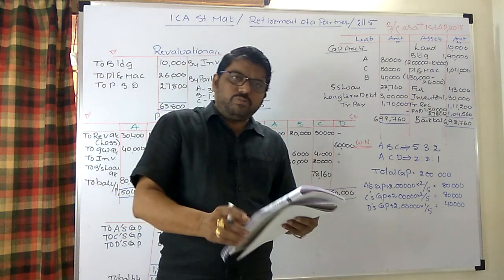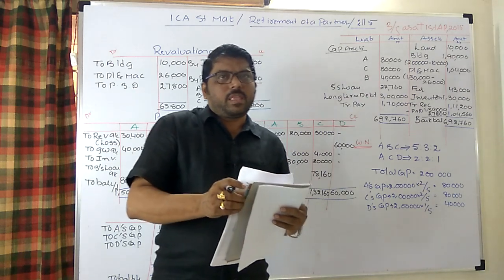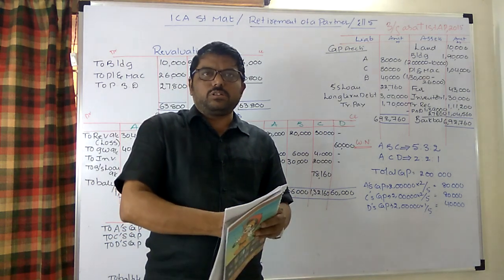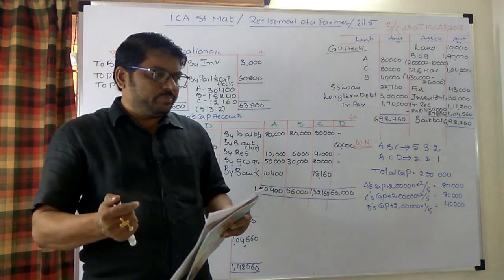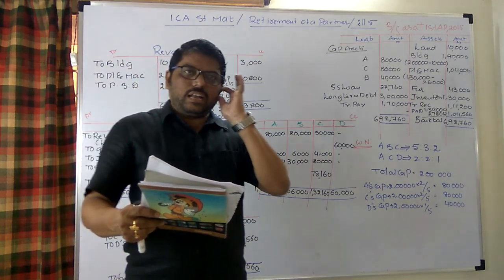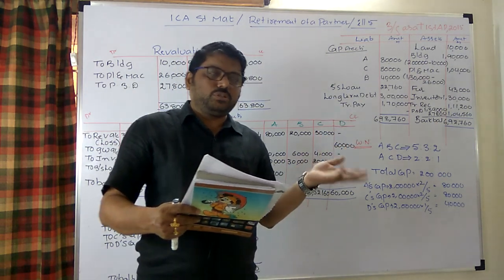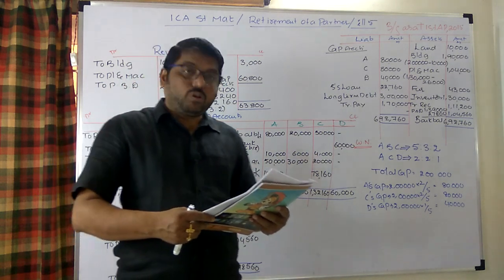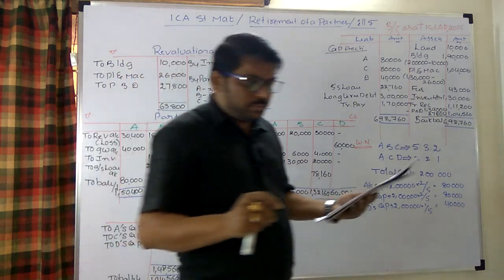This is the simple way to handle retirement cum admission of a partner. The key point is goodwill: in the earlier case, goodwill was adjusted through partners' capital accounts requiring sacrificing and gaining ratio calculations. In this method, simply raise goodwill to old partners in the old ratio and write it off by new partners in the new ratio — no need for sacrificing/gaining ratio. Net impact is the same. We will discuss the next problem in the next class. Bye.